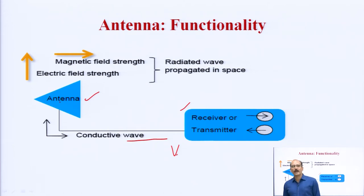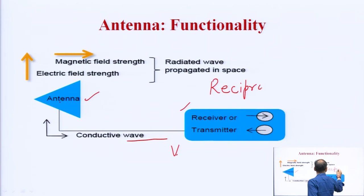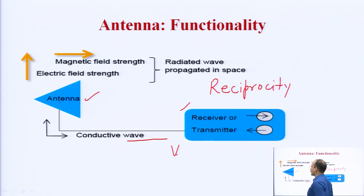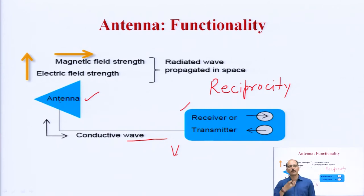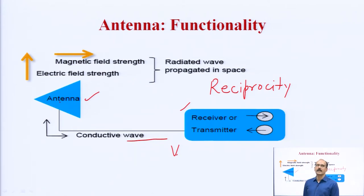Means aapka antenna dono sides mein kaam karta hai, aur dono sides mein kaam karne ki wajah se iski jo main principle pe baat aati hai — ye reciprocity theorem pe kaam karta hai. Yeh reciprocity theorem hi antenna ko aapka transmitting antenna aur receiving antenna dono ki tarah kaam karne wala banati hai. Isi ke andar ye electric field aur magnetic field ki directions ko bataya gaya hai.